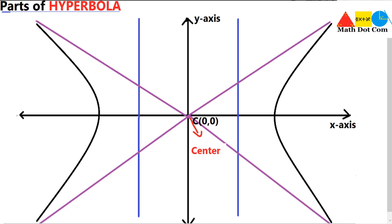The next part we are going to discuss are the vertices of the hyperbola. As we have two curves, one vertex will be on one side and the other vertex on the other side, each at a distance of 'a' from the center. So we have two vertices — one on the left side of the center and one on the right side. A vertex is basically a point of the curve where the curve makes its sharpest turn.